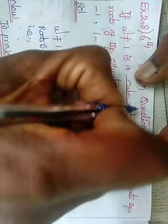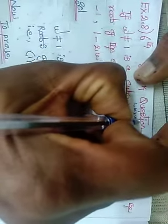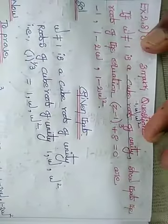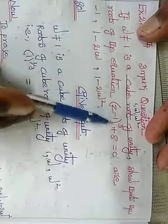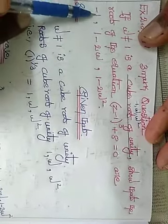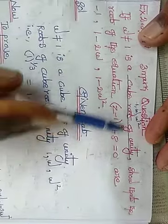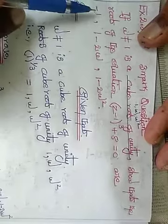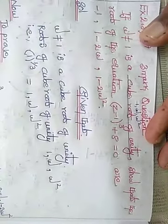The cube root of unity — question explanation. The answer is 1, omega, omega square. Show that the roots of the equation are: 1 minus 1, 1 minus 2 omega, and 1 minus 2 omega square — these are the three roots.